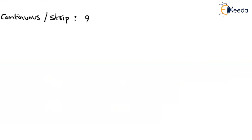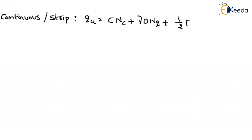If the question gives you a continuous or strip footing, there is no need to multiply by any shape factor. So you can directly write the equation: C·Nc plus γ·D·Nq plus one-half times B times γ times Nγ.